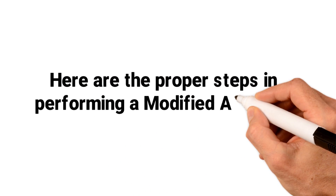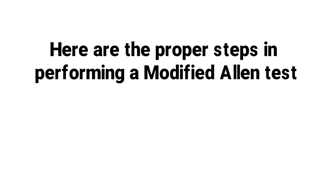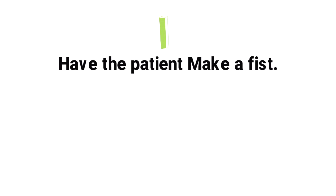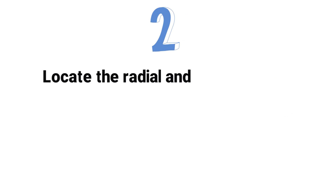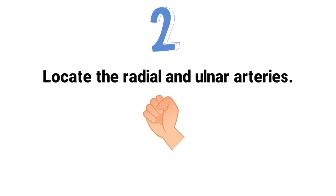Here are the proper steps in performing a modified Allen test. Step 1: Have the patient make a fist. Instruct the patient to clench his or her fist in order to enhance circulation within the arteries. If the patient lacks the ability to do so, close his or her hand tightly. Step 2: Locate the radial and ulnar arteries. The radial artery is located on the thumb side of the wrist and the underside of the forearm, while the ulnar artery is on the pinky side of the wrist. Make sure to locate the radial and ulnar pulses.